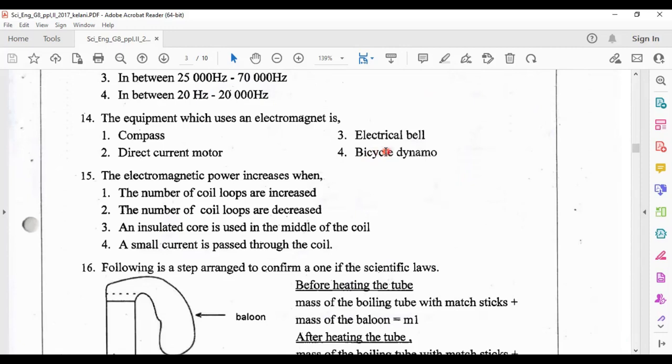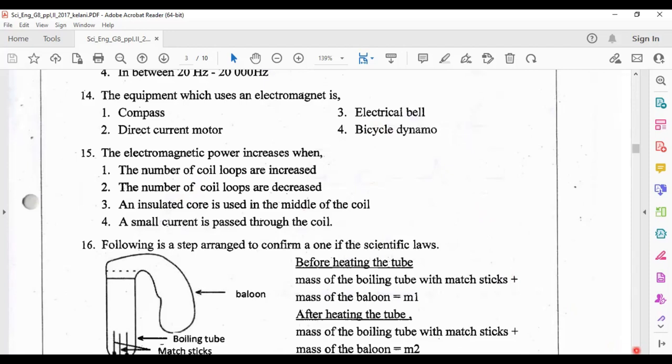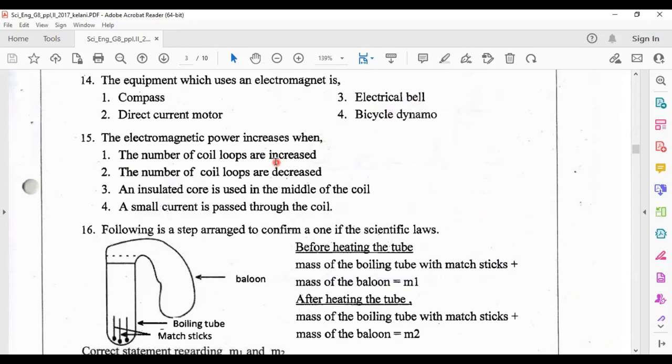The electromagnetic power increases when the number of coil loops are increased. When there are more coil loops in the electromagnet, then the power is also increasing. Answer one, the number of coil loops are decreased, is wrong. An insulated core is used in the middle of the coil, also wrong - we should use an iron core, a type of conducting core, not an insulated one. If we want to increase the power of the electromagnet, we have to give a large current, not a small current. So answer number one is correct.